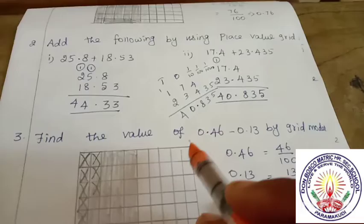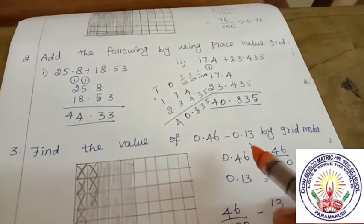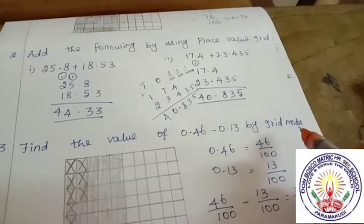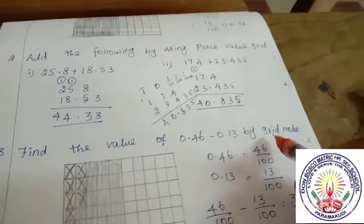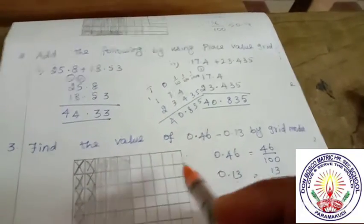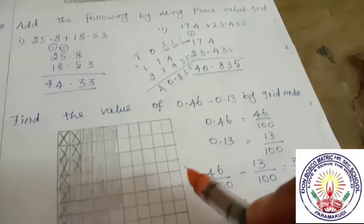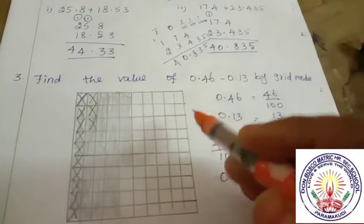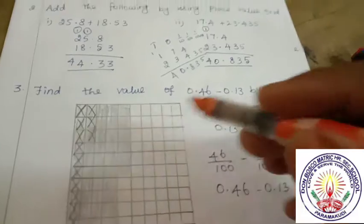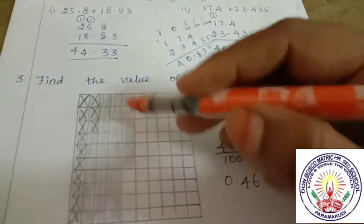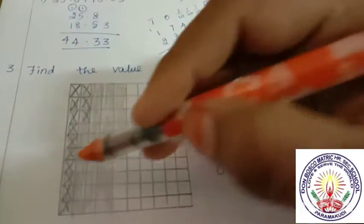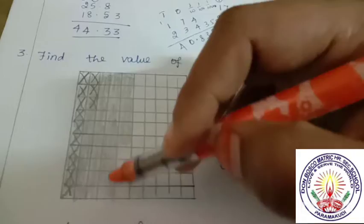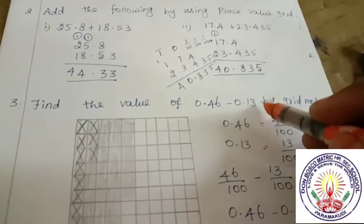Next find the value of 0.46 minus 0.13 by grid model. Grid model means you draw 100 squares, row and column, 10 lines up and down, row and column. So 100 squares. 0.46 means 46 squares. Next is 0.13, so we remove 13 boxes using different colors.